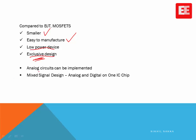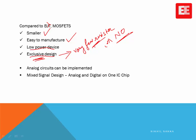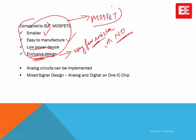Another key advantage of MOSFETs is the possibility of exclusive design — a design that employs very few resistors, or sometimes no resistors at all. This kind of exclusive design is not possible with BJT. Considering all these advantages over BJT, the MOSFET is today the most widely used three-terminal semiconductor device. Any electronic gadget or product in the electronics industry is manufactured based on MOS — Metal Oxide Semiconductor — technology.